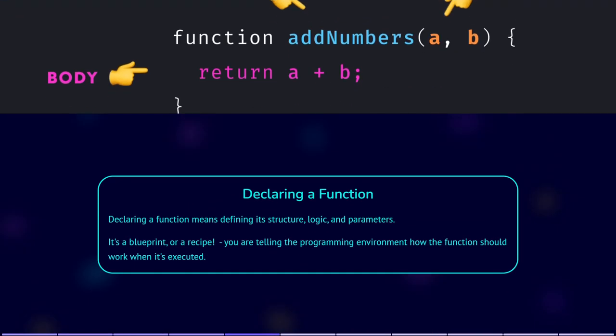Declaring a function means defining its structure, logic and parameters. It's like creating a blueprint for the function. When you declare it, you are telling the programming environment how it should work when it's executed. Think of it almost as writing a recipe for instructions.